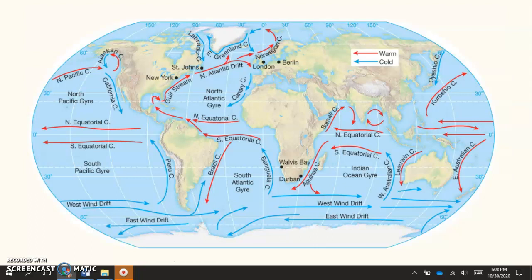And this is just a visual of the movement of currents. So we see the currents that are in red are warm water currents so they will be warmer in temperature and then in blue we see those cold water currents as well.